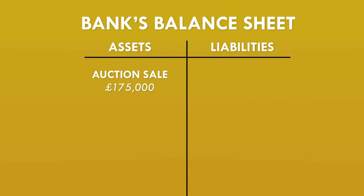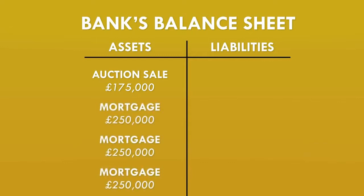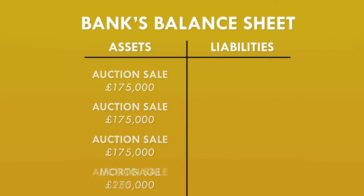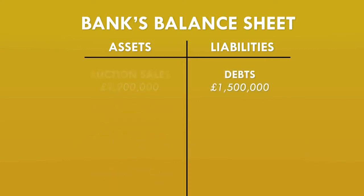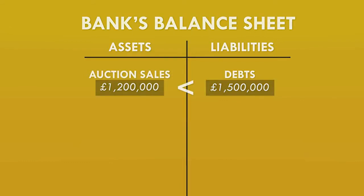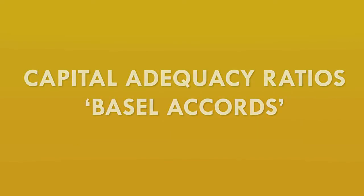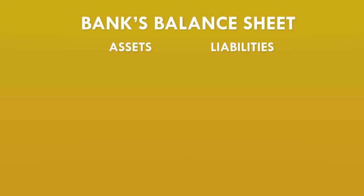If only a small percentage of loans go bad, there's no problem — the bank already expects one or two out of every hundred mortgages to default, and interest payments from performing loans should cover these losses. But if everyone starts defaulting at the same time, the bank's assets can shrink rapidly. If assets shrink so much that they fall below liabilities, the bank is insolvent and should be liquidated and shut down. The problem is that while the bank is being liquidated, most customers will be unable to access their money — this can cause big problems in the economy and could even trigger a panic that causes difficulties at other banks too.